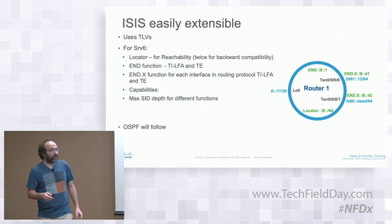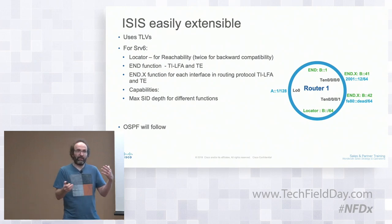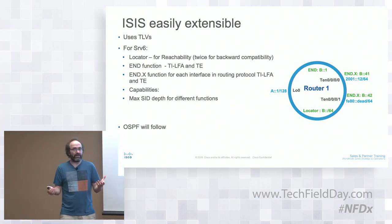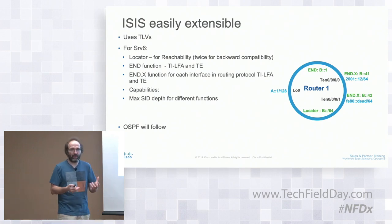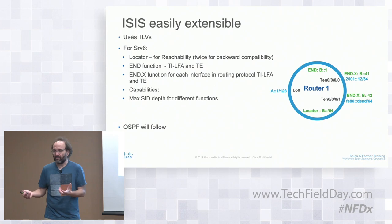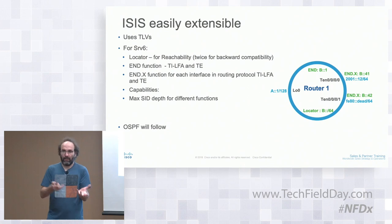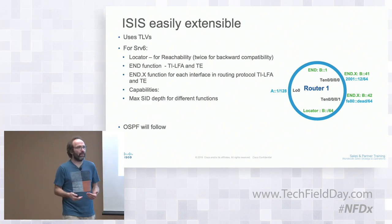The IGP example uses IS-IS because it's multi-protocol. OSPF v2 is IPv4-only and OSPF v3 is a separate protocol, so service providers often shift from OSPF to IS-IS when adding IPv6 to their core—IS-IS supports both address families in a single protocol. Cisco's first SRV6 IGP implementation is for IS-IS.